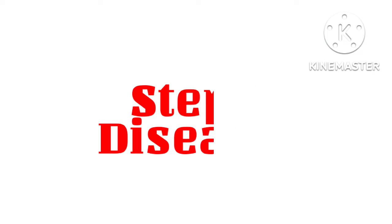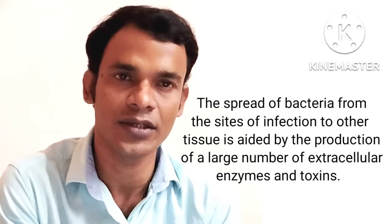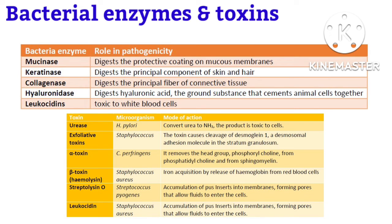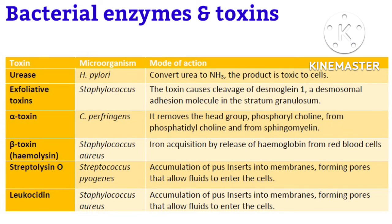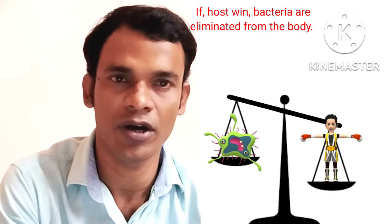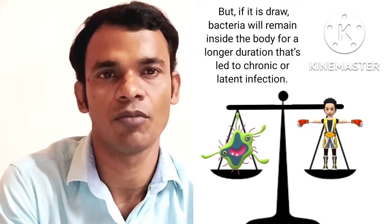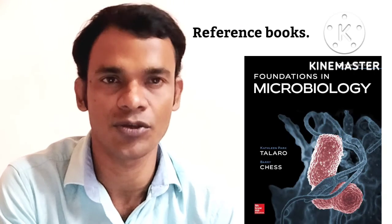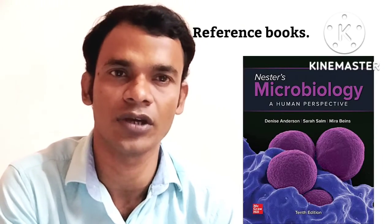When all those defenses are overcome, the next step is to destroy cells, acquire nutrition, multiply rapidly, and escape. The spread of bacteria from the site of infection to other tissues is aided by production of extracellular enzymes and toxins. Toxins and enzymes that break down cells also play a role in distributing the organism. In some cases, not the bacteria but the toxin actually kills the animal within a few minutes. If bacteria win, disease progresses; if the host wins, bacteria are eliminated. But if it is a draw, bacteria remain inside the body for a longer duration, leading to a chronic or latent infection where bacteria wait for a golden opportunity to attack. Despite modern scientific inventions like early diagnosis, hospitalization, and drug treatment, microbes still kill millions of people every year — they are co-evolving with us.